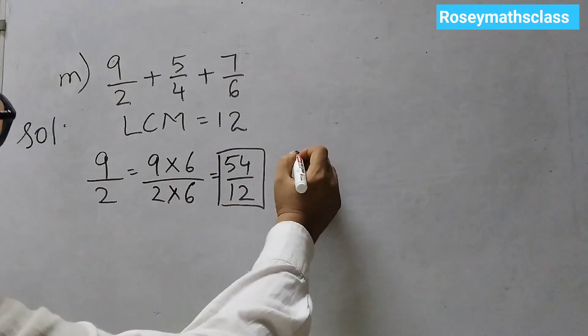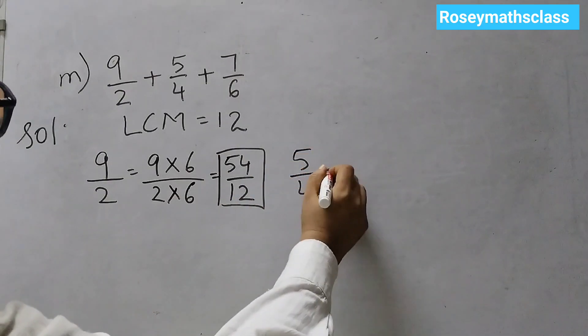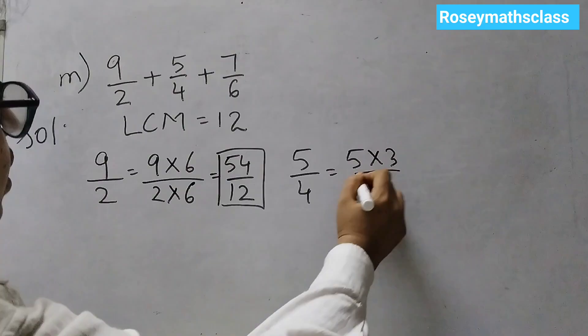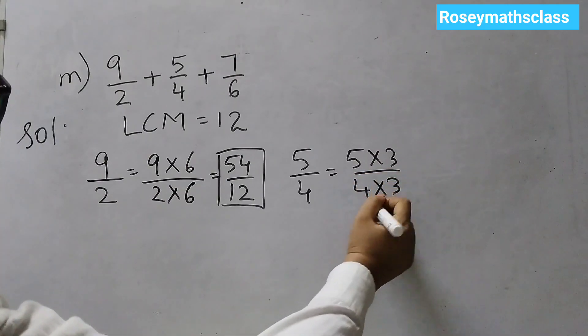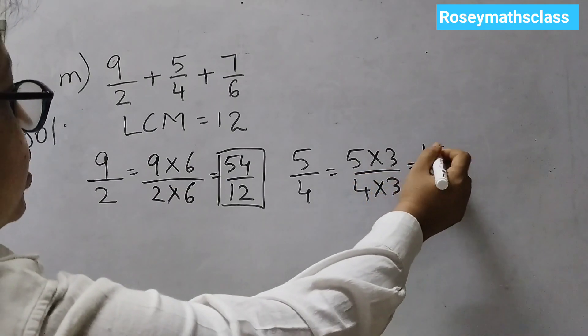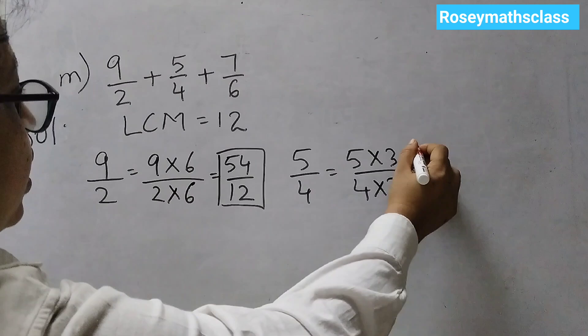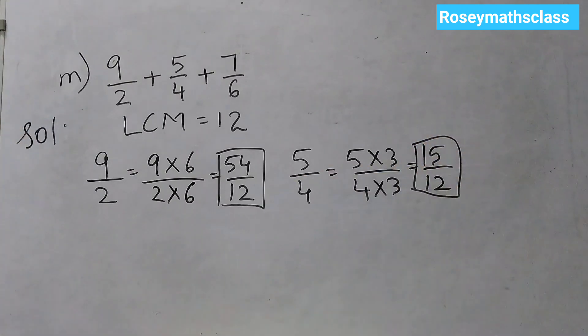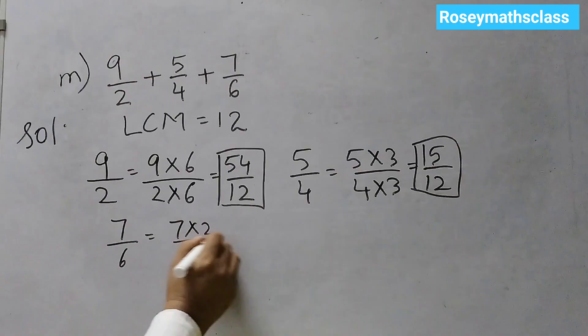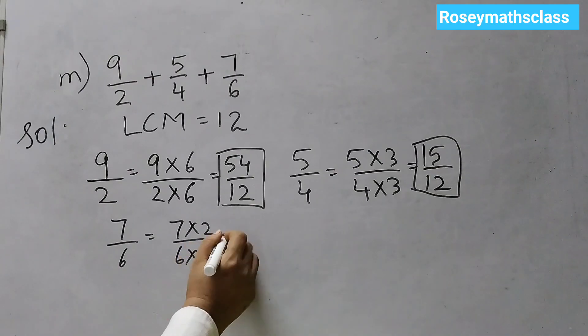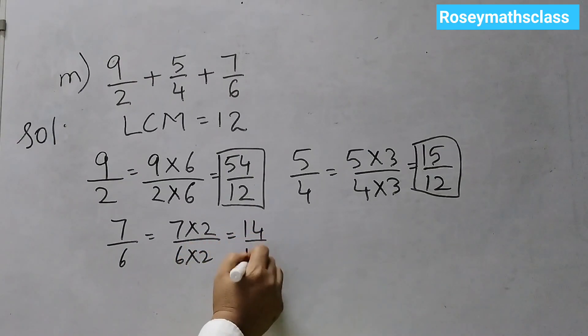Now, 5 over 4. Multiply 5 into 3 and 4 into 3. 4 threes are 12. So, 15 over 12. 7 over 6. So, we will multiply by 2. Because 6 into 2 is 12. 14 over 12.